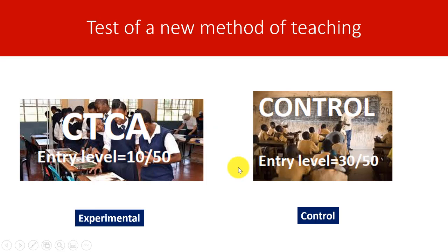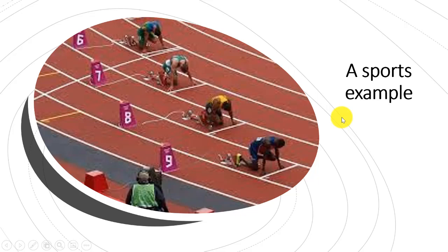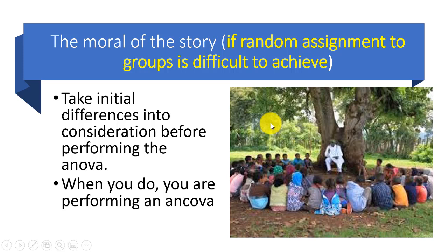Here's a sports analogy. On a running track, the same total length applies, but the person on the inside lane has a shorter distance — that's why athletes are spaced at different starting positions. The moral of the whole story is: if random assignment to groups is difficult to achieve, you must take initial differences into consideration before performing the ANOVA. What you do at that time is perform an analysis of covariance.